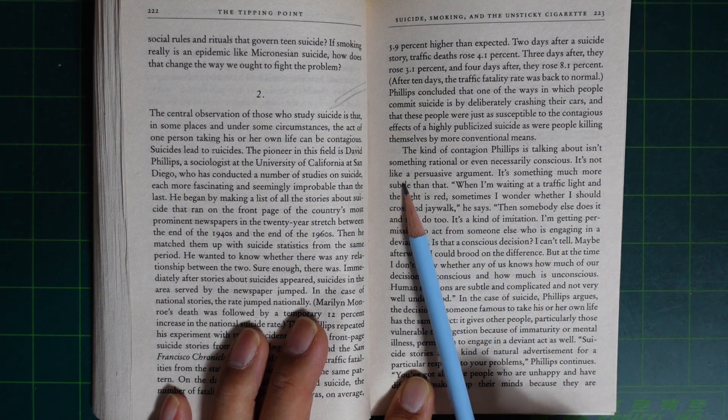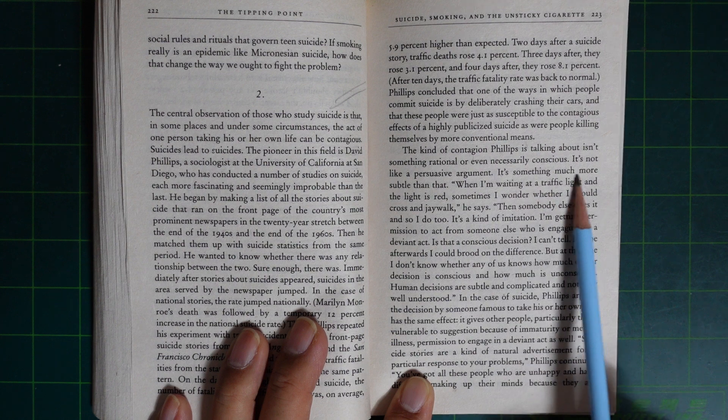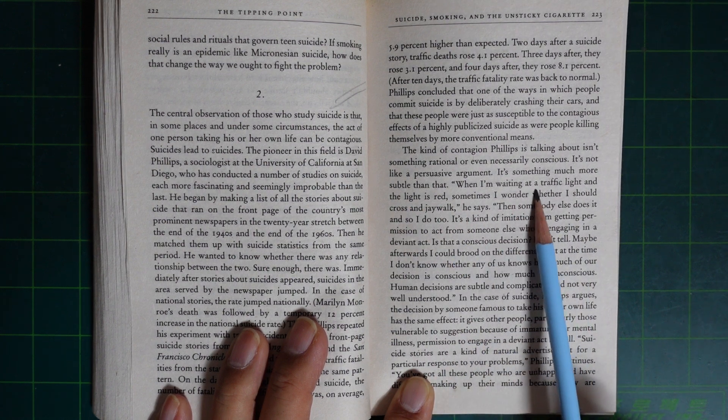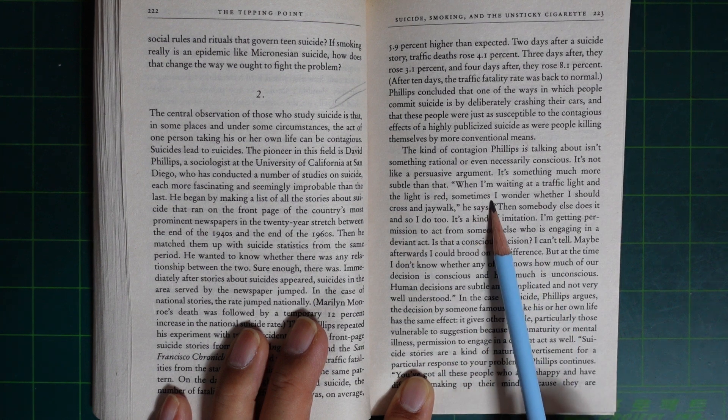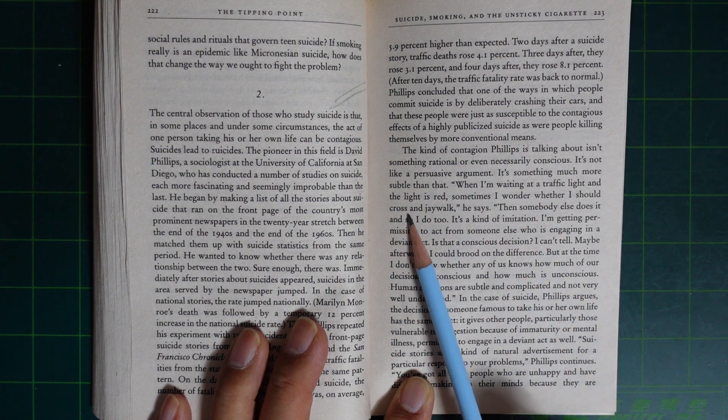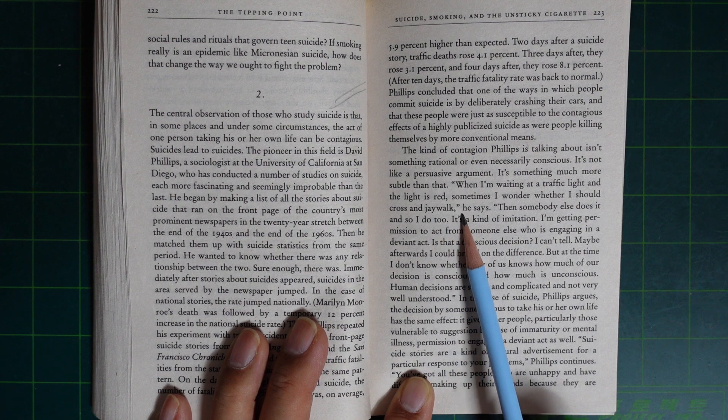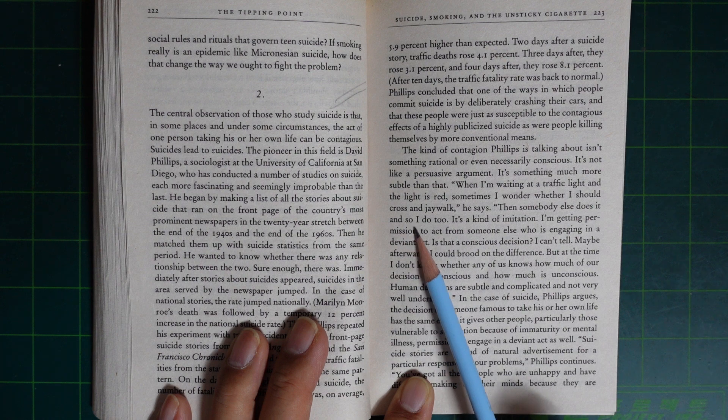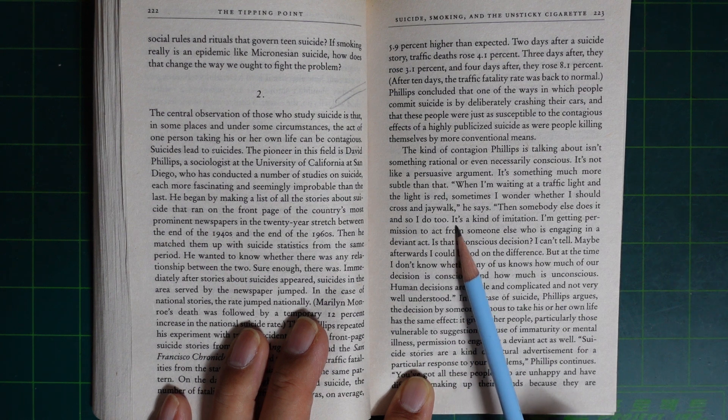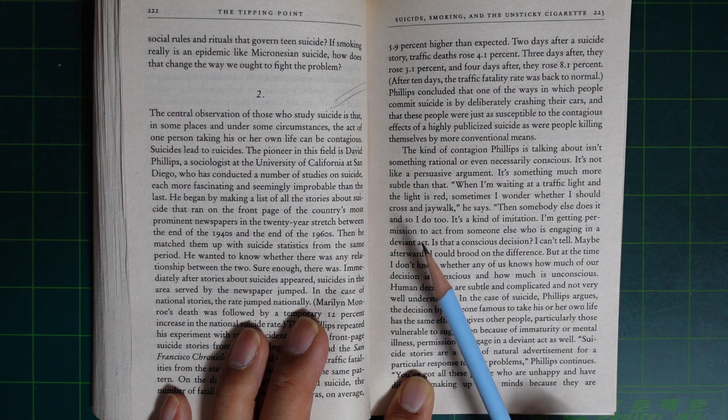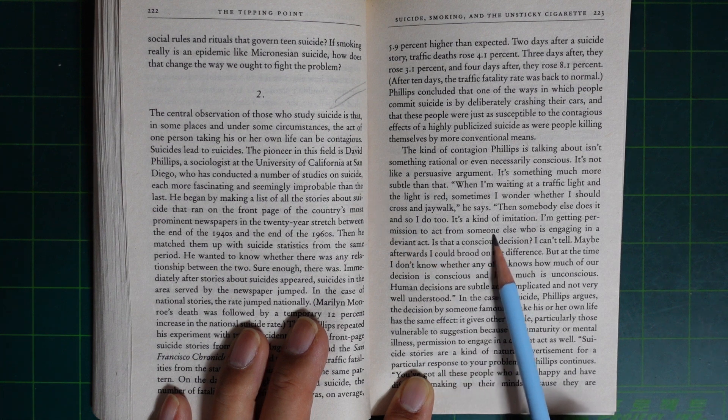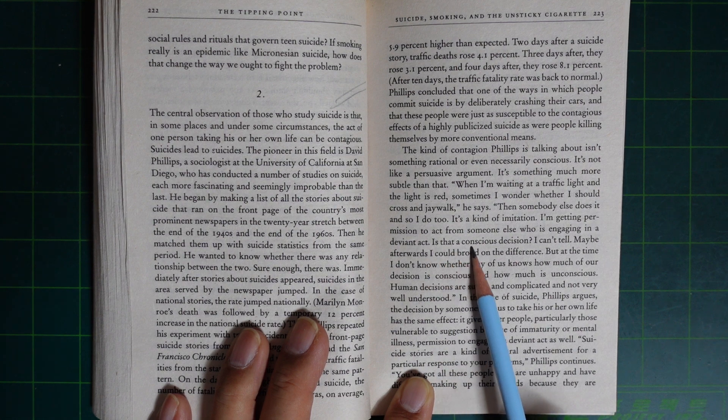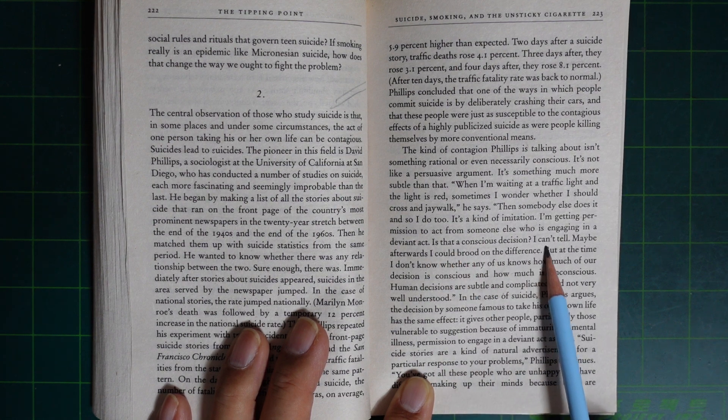It's not like a persuasive argument. It's something much more subtle than that. When I'm waiting at a traffic light and the light is red, sometimes I wonder whether I should cross and jaywalk, he said. Then somebody else does it and so I do too. It's a kind of imitation. I'm getting permission to act from someone else who is engaging in a deviant act. Is there a conscious decision? I can't tell.